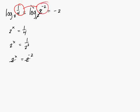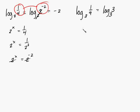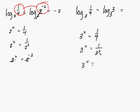What if we have log base 3 of 1/9? This can be written as log base 3 of 3 to some power. We have 3 to the x equal to 1 over 9, which is 1 over 3 squared. Bringing 3 squared up gives 3 to the negative 2. The bases are the same, so the exponent is negative 2. The answer is negative 2.